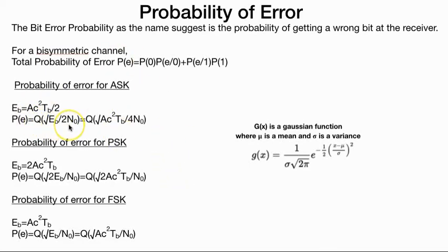Now let me go step by step and make clear what probability of error is. Probability of error is the probability of getting a wrong bit at the receiver — suppose you transmitted a zero and received a one, or you transmitted a one and received a zero. The addition of both error probabilities in a binary symmetric channel will give you the probability of error.